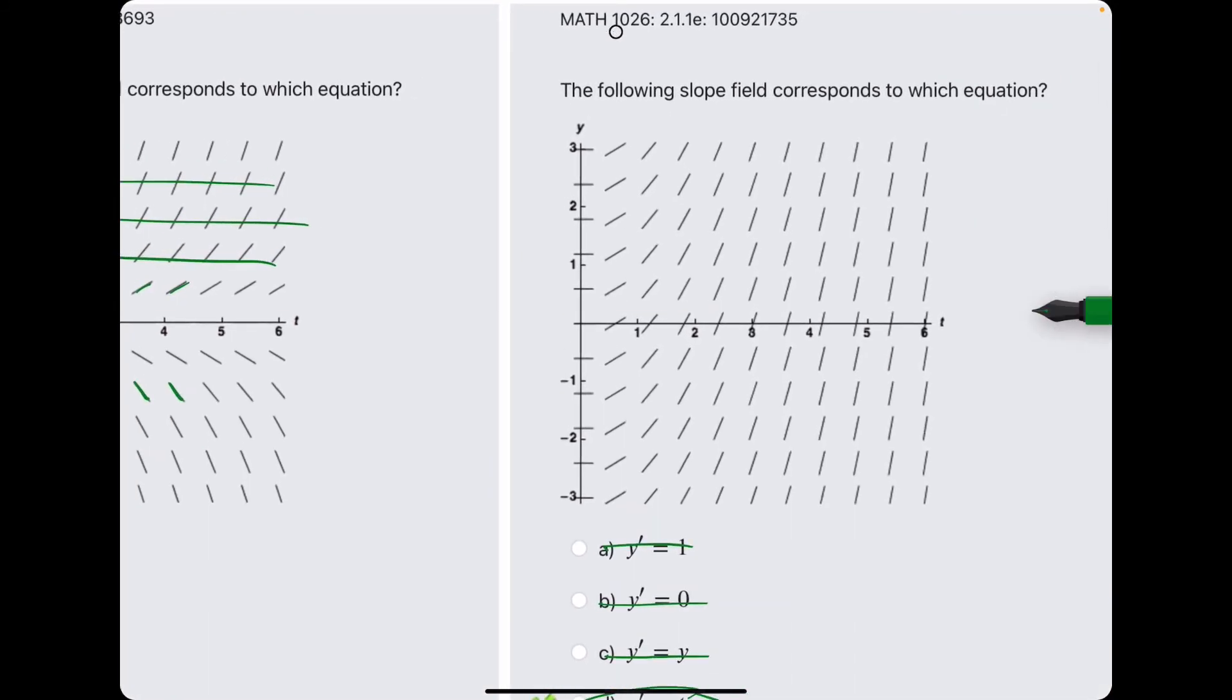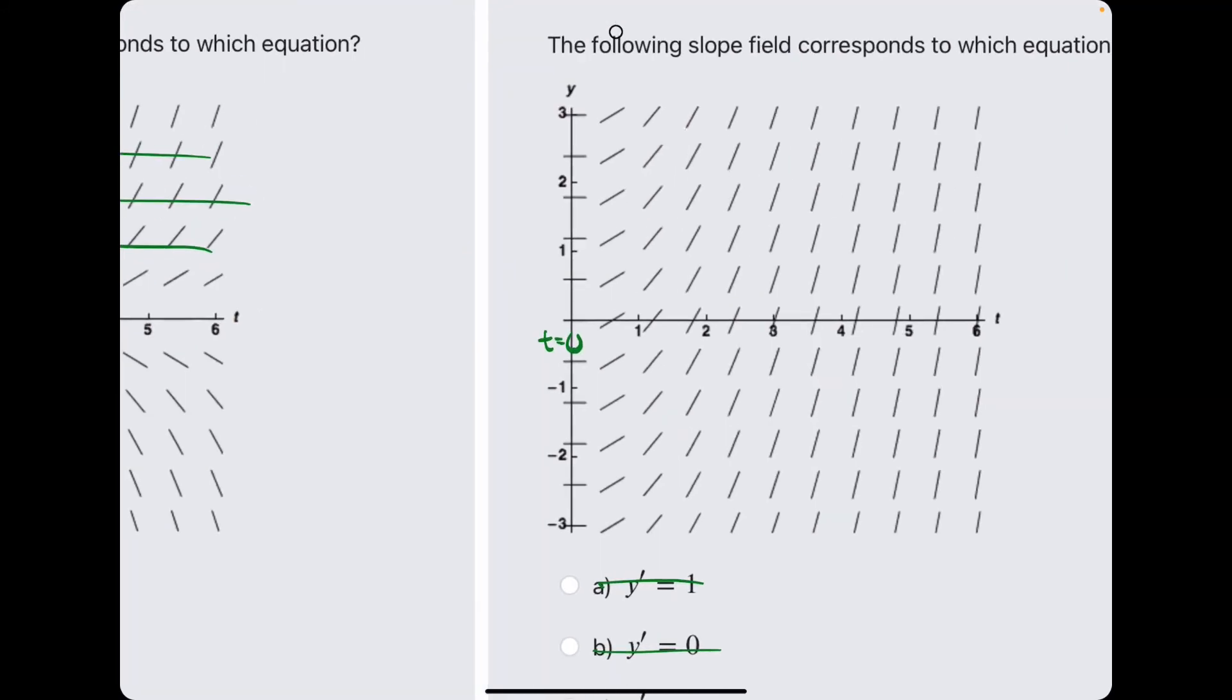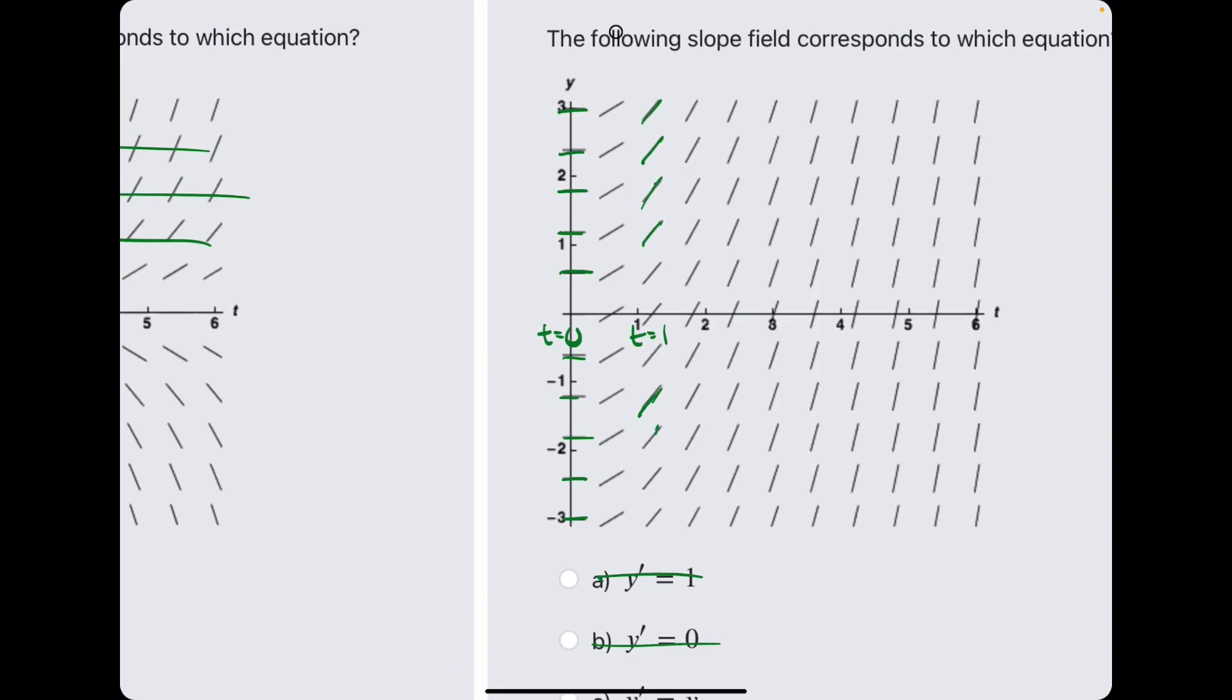So as we scan from left to right, so starting at t equals 0, all these slope lines have a slope of 0. They're all flat. But then it's only as you increase to t equals 1, all of these have a slope of 1, all the way down even.